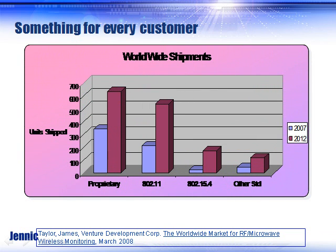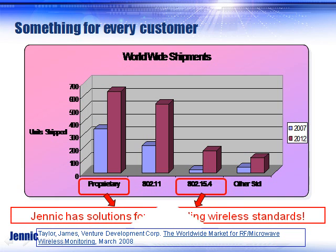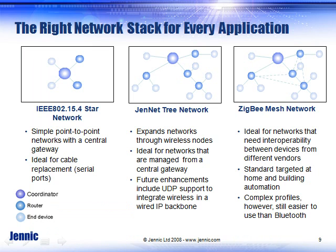GenNet offers something for everybody. Although ZigBee and other standards are becoming very popular, most designs still want to do something proprietary — they don't want to join an alliance, they don't want to pay royalty fees. Therefore, a software stack like GenNet or 15.4 makes a lot of sense for those applications. Just because you're running 15.4 software does not mean that you have to run a ZigBee stack. There are a lot of different stacks, and GenNet offers a variety to customers — that differentiates us.